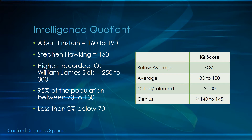So what is IQ? An IQ is simply a measurement of your intelligence and is expressed in a number. The average IQ is 100. If you achieve a score higher than 100 you are smarter than the average person, and a lower score means you are somewhat less smart.